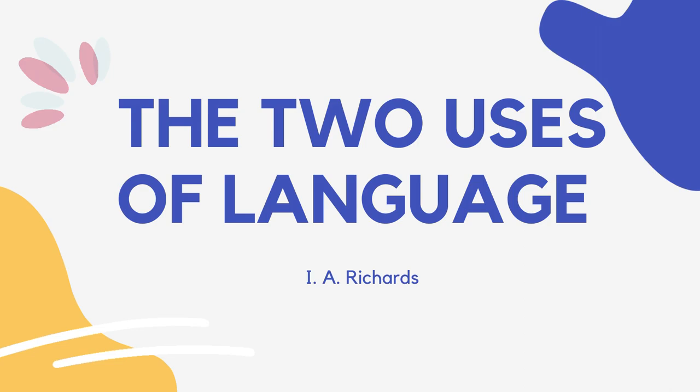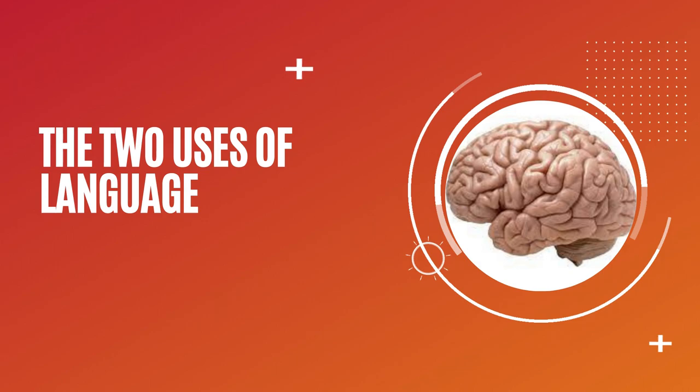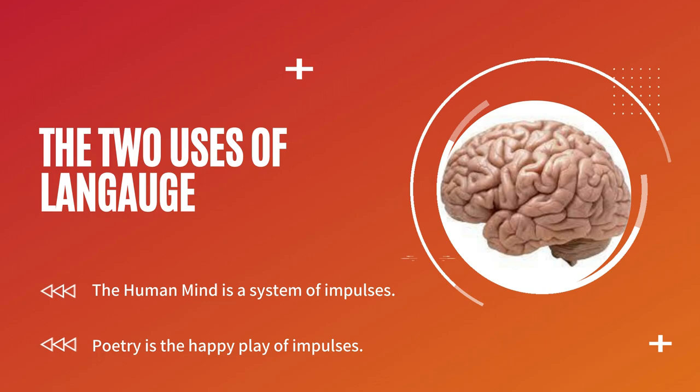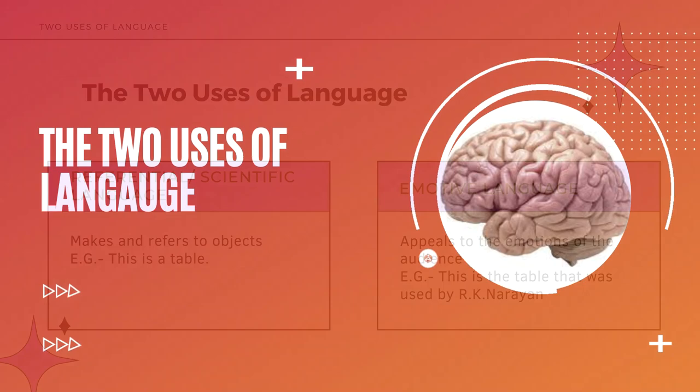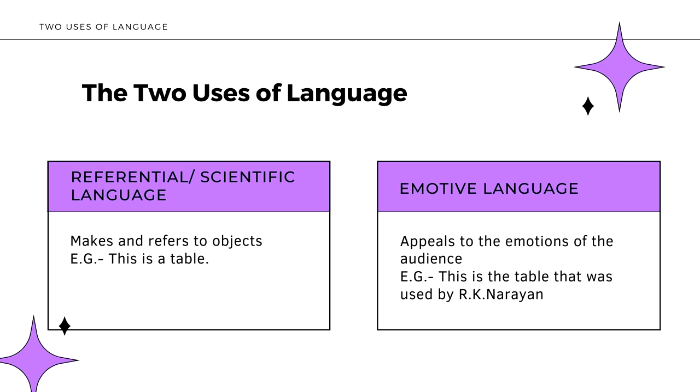Now let's talk about IA Richards' two uses of language. 'The Two Uses of Language' is the 34th chapter of 'Principles of Literary Criticism', published in 1924. Richards recorded and examined the human mind, concluding that the human mind is a system of impulses, and poetry is the record of the happy play of impulses. To explore the language that poetry uses, he distinguishes two different uses of language.